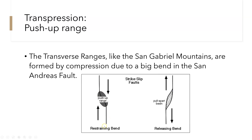In the San Andreas fault we have this big bend, and as it's being pulled along, a restraining bend would be a pushing motion — the strike-slip fault is moving toward that area. A releasing bend would be where it's pulling apart, or the strike-slip fault faces the opposite direction. So we would either see a pull-apart basin or a push-up range, which would be fairly small.